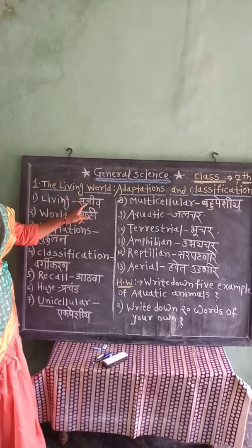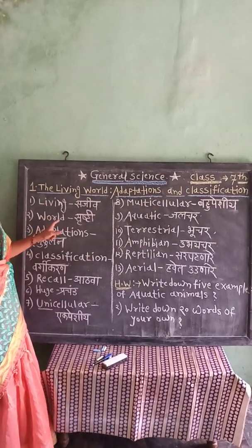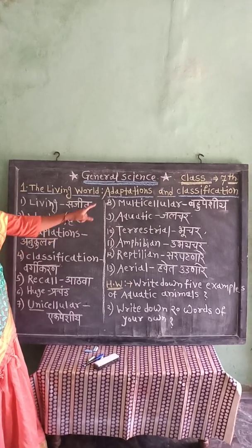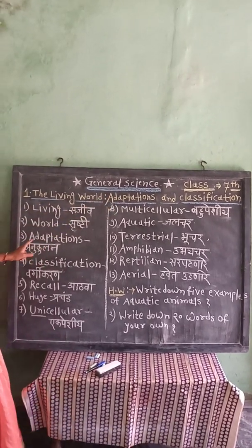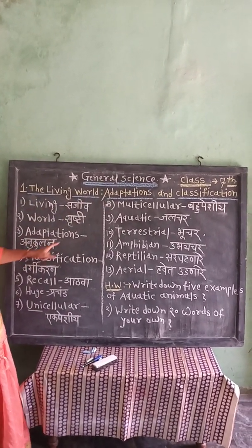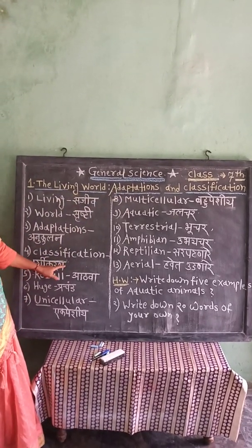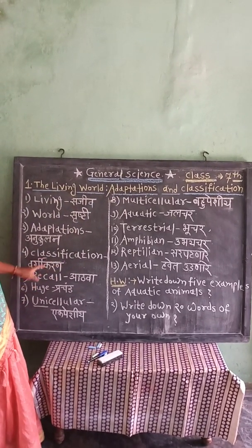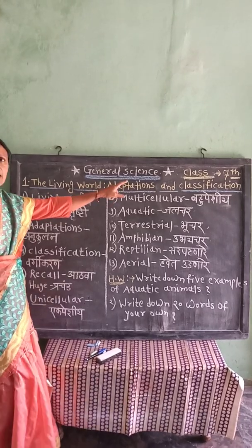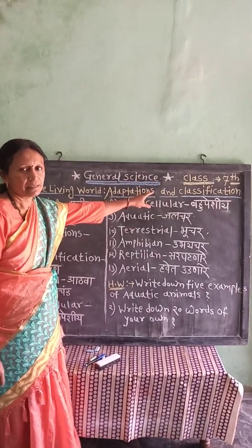Living means Sajeev. Word means Srushti. Adaptation means Anukulan. Classification means Vargi Karan. So our key terms are: Sajeev, Srushti, Anukulan, and Vargi Karan.